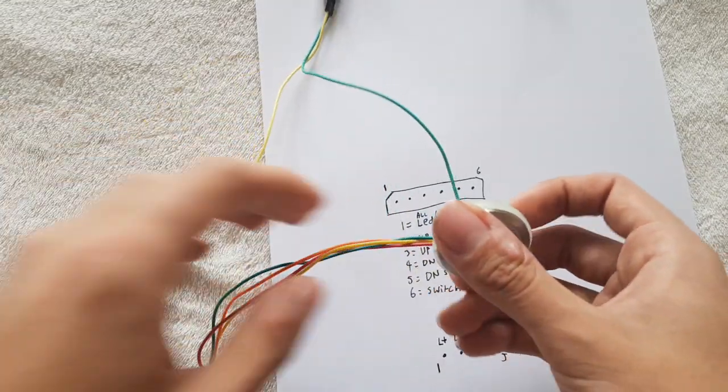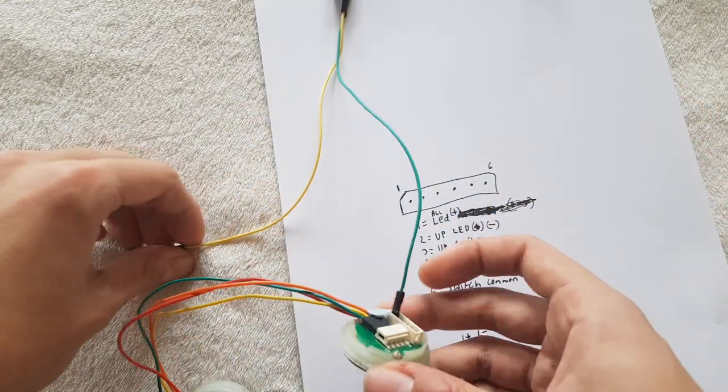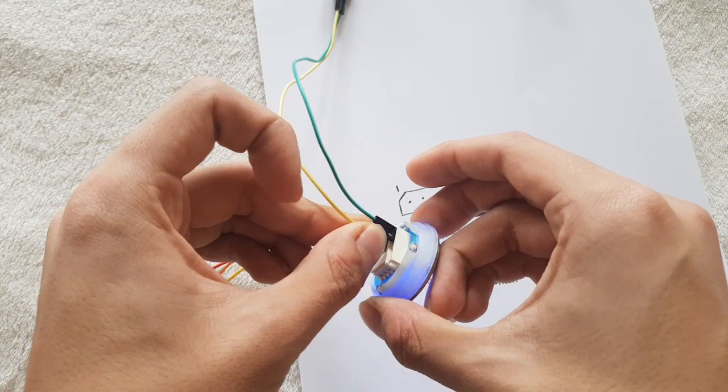If I wanted the up LED to light, which is that one there, this is the down one with four wires, I would hook it up to pin number two, the negative there, and that would light, as you can see there.